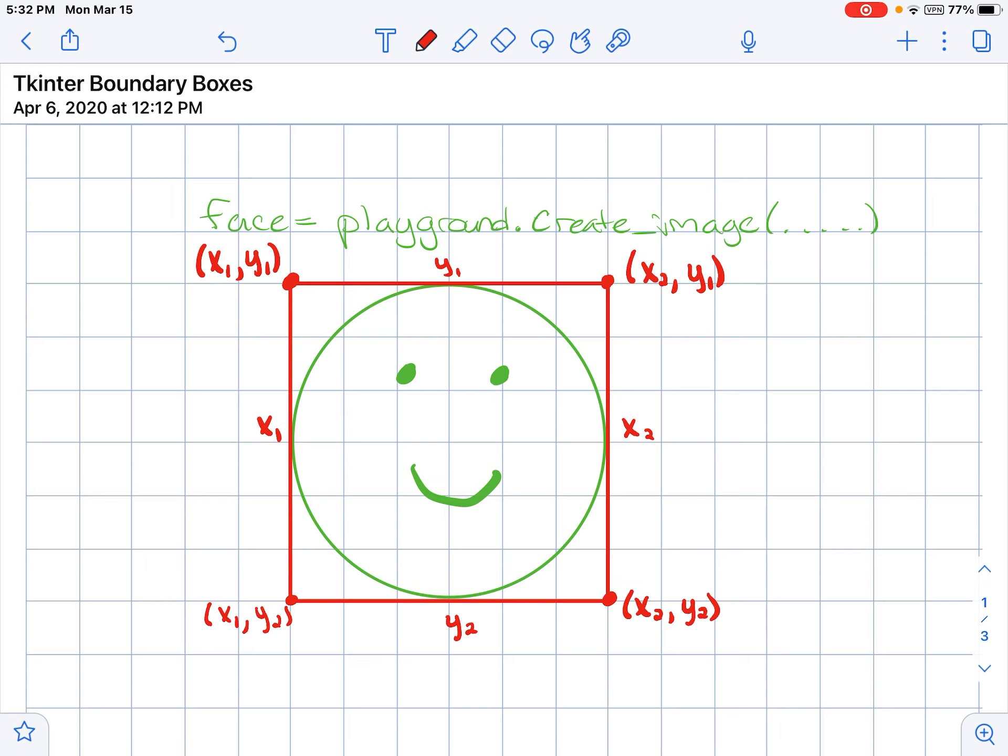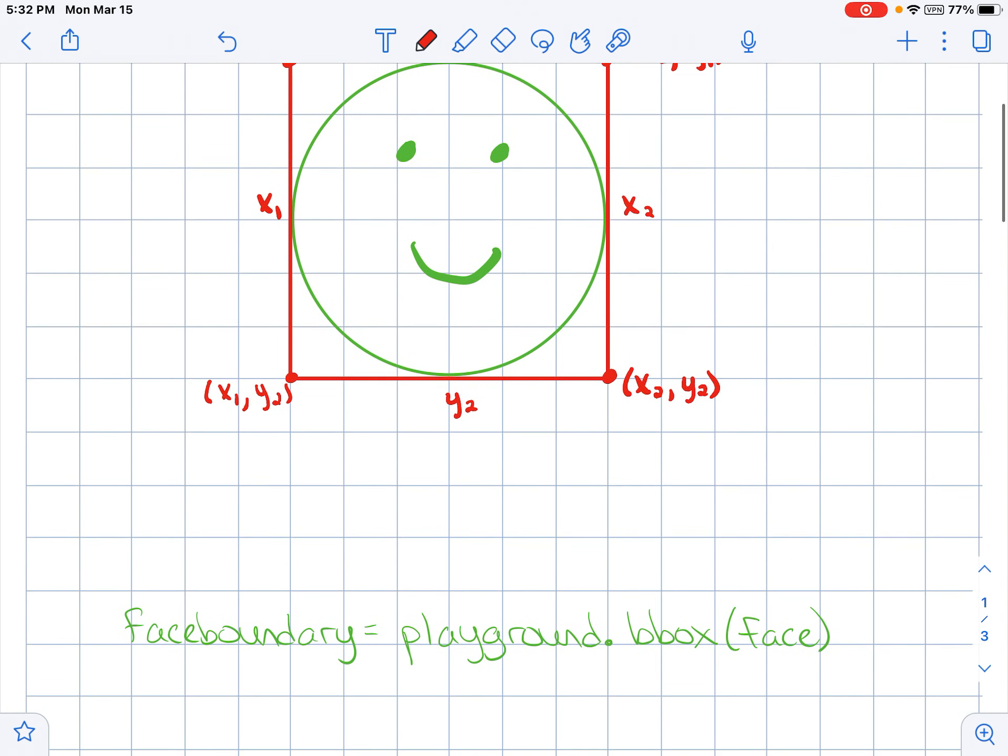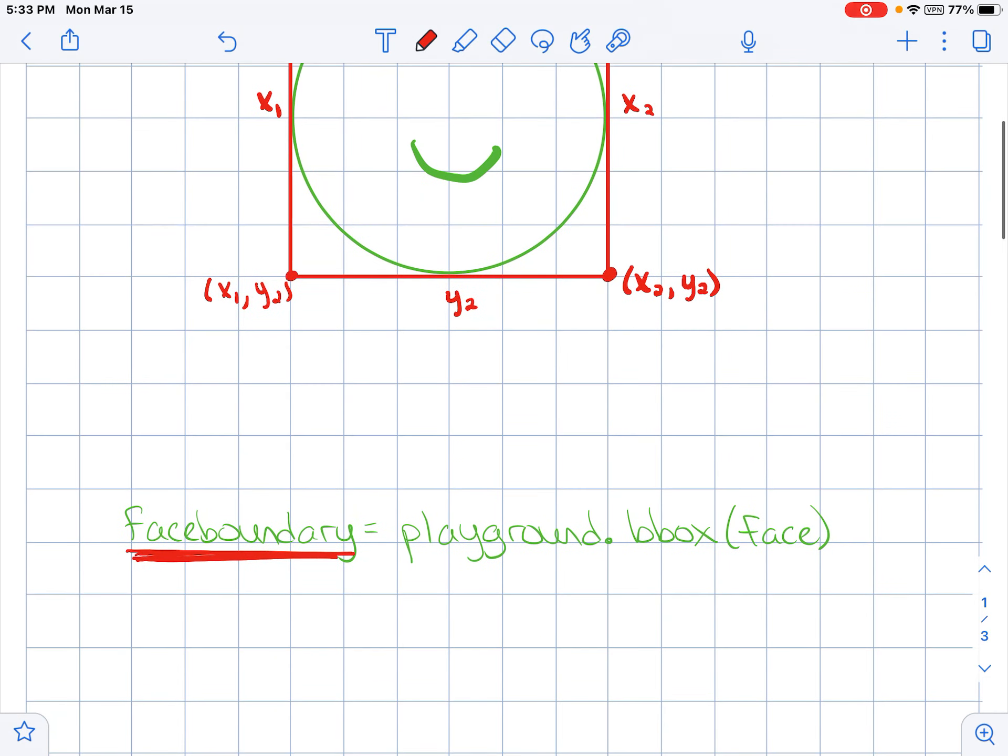That's going to come in handy later on. Now what we need to do in Tkinter is get that information so we can figure out where is your smiley face at all times. I'm going to create a variable, doesn't matter what your variable is called. I'm just going to call this the face boundary. In order to find the boundary of the face, the command is playground.bbox. What image are we trying to find the boundary box for? We're trying to find the boundary box for the face.